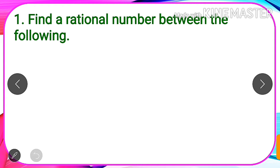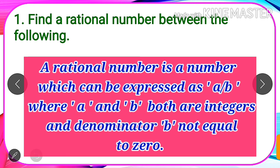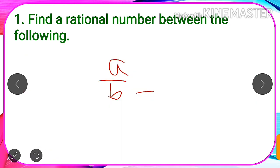Before that, we will learn what is a rational number. A rational number is a number which can be expressed in the form A by B, where A and B are both integers and B is not equal to 0.